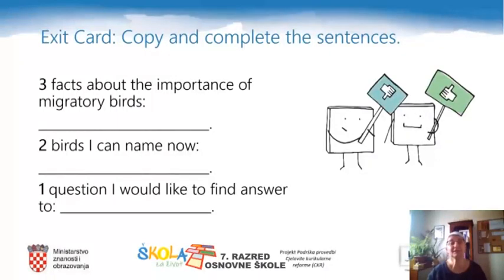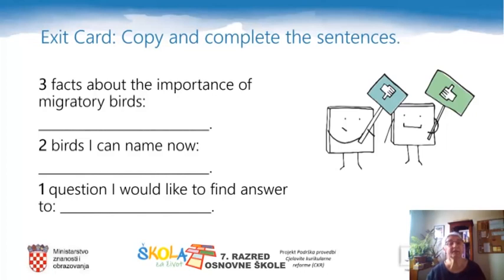The last activity for today's lesson is your exit card. Read carefully the sentences on the screen, copy them, and complete. Write three facts about the importance of migratory birds that you have learned. Name two birds you can now identify. Write one question you would like to find the answer to — what else would you like to learn about birds? Complete your exit card, and that's the last activity for today's lesson. I hope you enjoyed today's lesson and learning about birds. I hope you will start observing the World Migratory Bird Day, which is this week on the 9th of May. Goodbye until our next lesson.